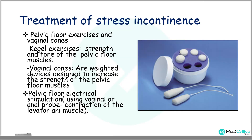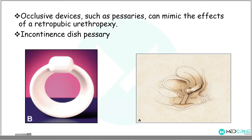In treating stress incontinence, we can use pelvic floor muscle exercises and vaginal cones. Kegel exercises help strengthen the tone of the pelvic floor muscles. Vaginal cones are weighted devices designed to increase the strength of the pelvic floor muscles. Pelvic floor electrical stimulation using either vaginal or anal probes causes contraction of the levator ani muscles. Occlusive devices, such as an incontinence dish pessary, can be used to mimic the effects of retropubic urethral support.